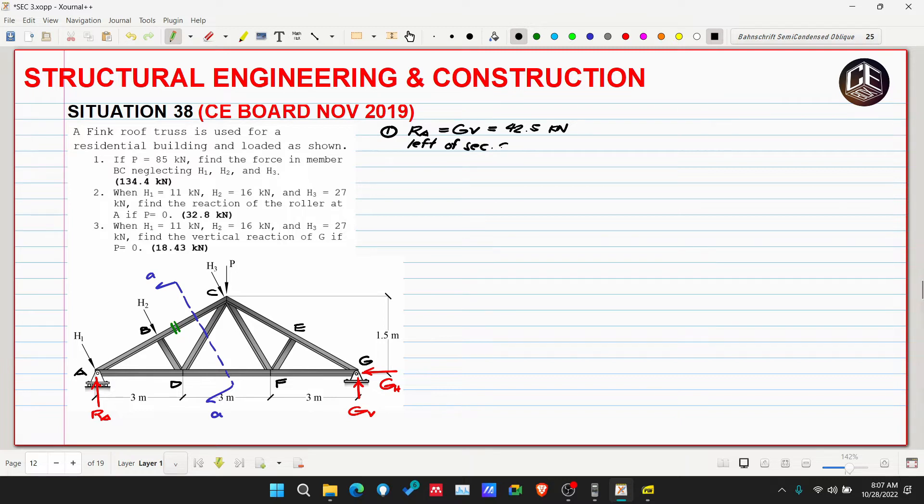Now let's take the left of section AA. Drawing it out: our RA is 42.5 kilonewtons. Assume BC is a compressive force. This is BC, DC, and DF. These are letters A, B, and D.